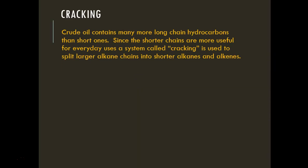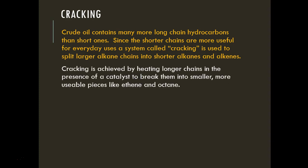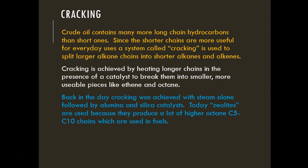Cracking is a technique used to break larger hydrocarbon chains into shorter, more useful ones. It is achieved by heating longer chains in the presence of a catalyst to produce smaller pieces like ethene and octane—ethene for making plastics, octane as a major component of gasoline. Originally, cracking used steam with alumina and silica catalysts. Today, molecules are cracked and passed through zeolites, which produce a higher yield of 5- to 10-carbon chains useful in fuels.